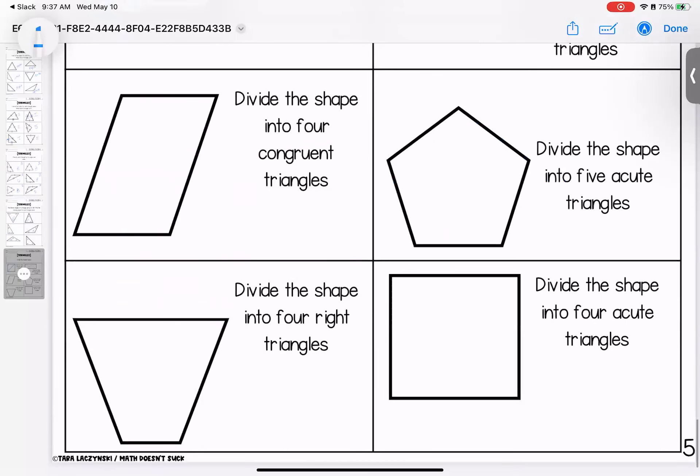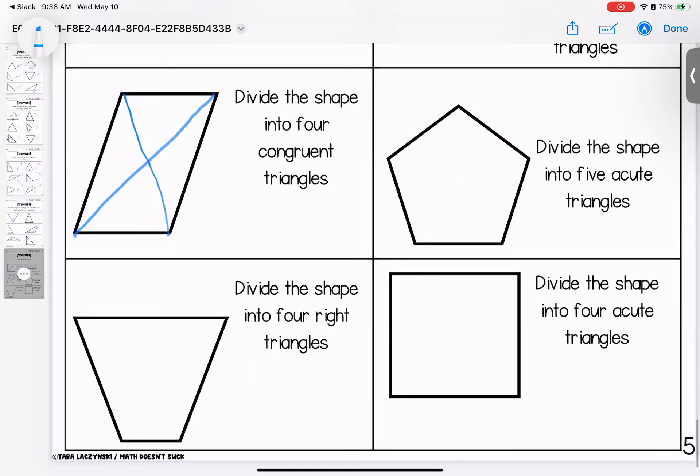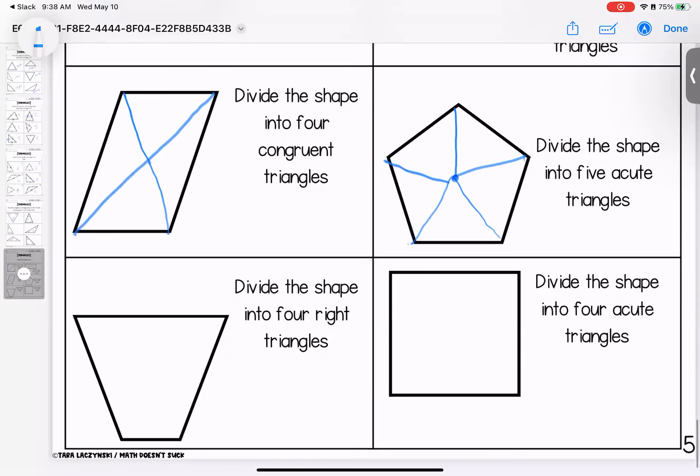Four congruent triangles. If I want four congruent triangles, I can cut them this way. And that way. And that way. I have four congruent triangles. Five acute. I want to find that center point. And all of the points come in from the edges to meet.